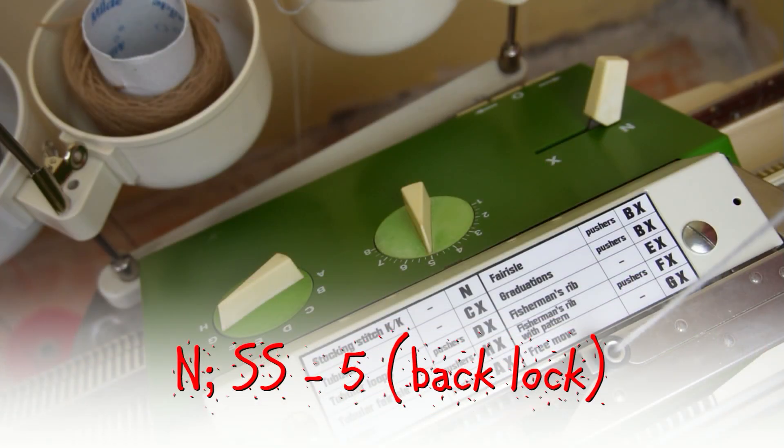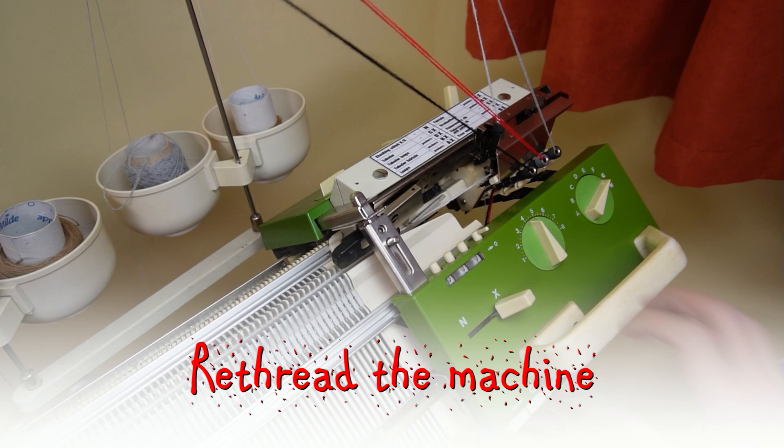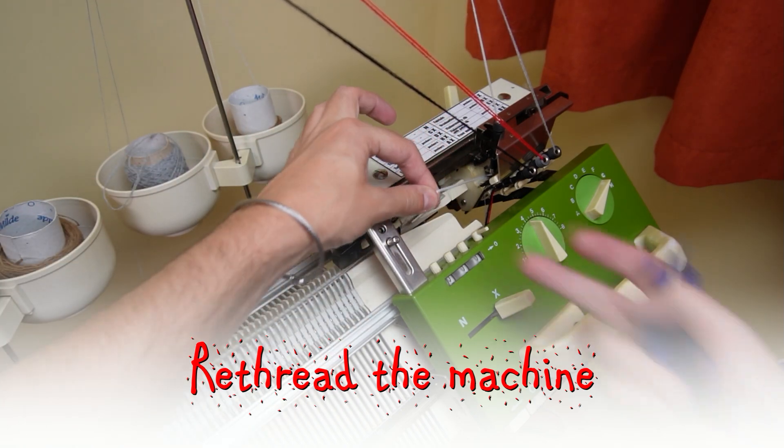My front lock is set to GX and the back one is set to N. Now move the lock to the color changer and retract the machine.